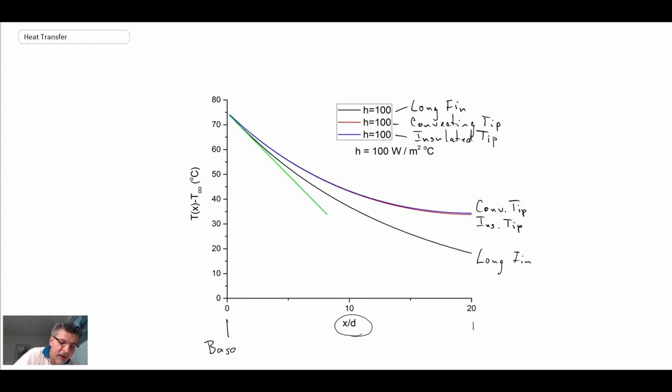And then we're plotting temperature of x minus T infinity. And so what we can see is that the solutions for the convecting and the insulating tip are really quite similar to one another. Even though the insulated tip solution was quite a bit simpler analytically, it only had a hyperbolic tan, whereas the convecting tip had hyperbolic signs and cosines in it.